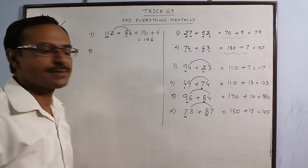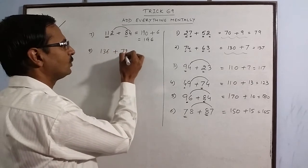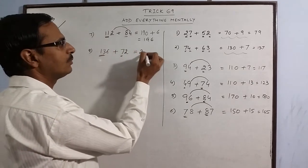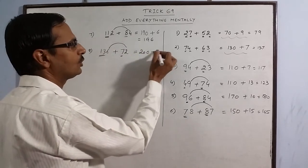More such examples. Say 136 plus 72. 13 plus 7 is 20. Put 1 0. 6 plus 2 is 8. 208.